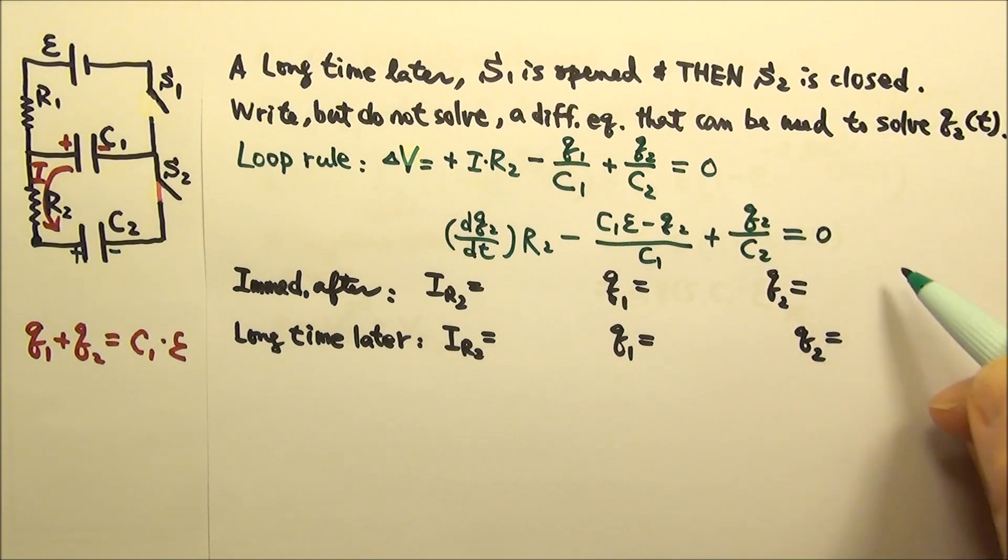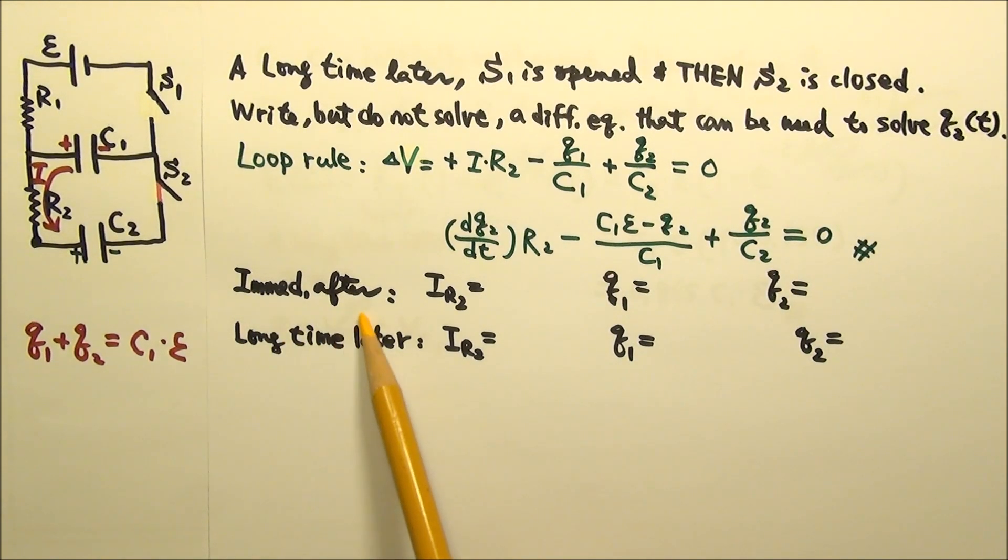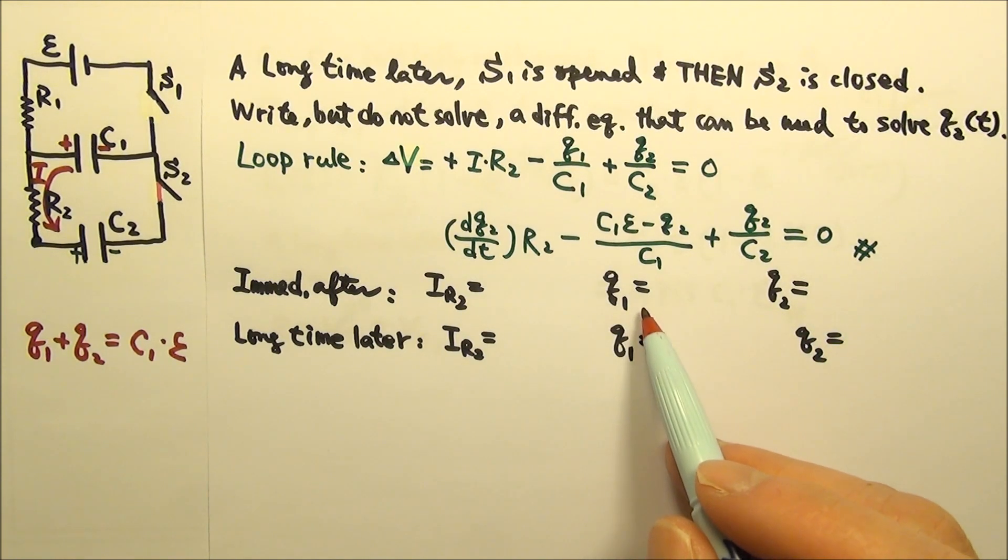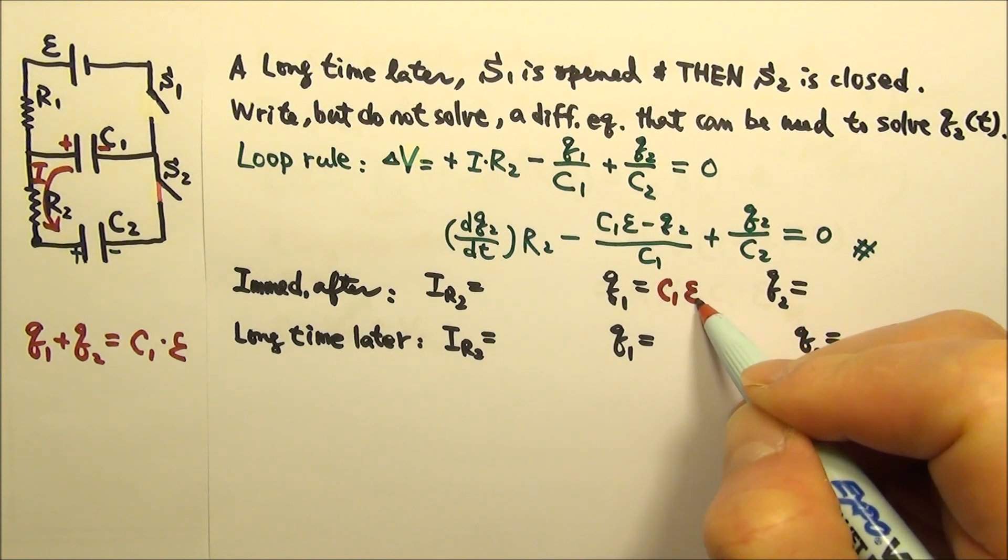Here we have our differential equation. How about immediately after S2 is closed? Immediately after a change is made, the charges on the two capacitors are the same as before, because it takes time to change the amount of charges on a capacitor.